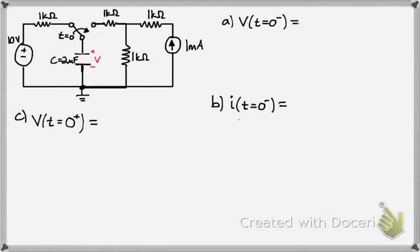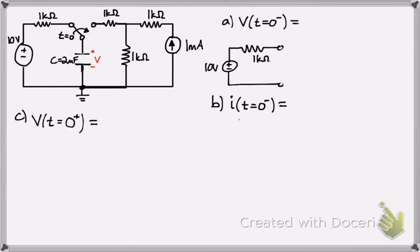Here's the circuit — I just kind of redrew it — and we're going to find the voltage at T equals zero minus, which pretty much means right before the switch is flipped. The switch hasn't flipped yet, so we can describe the relationship here: because the switch hasn't been flipped yet, it's technically like an open circuit for that section there, for what is the voltage across the capacitor. That's what we're solving for V, so it's just kind of open because the switch hasn't flipped yet.